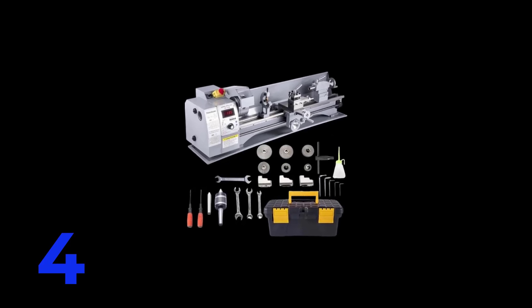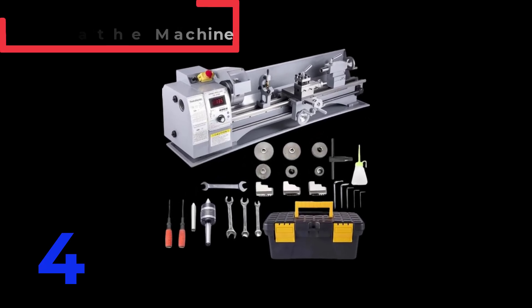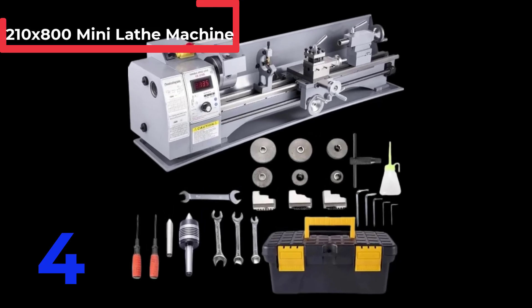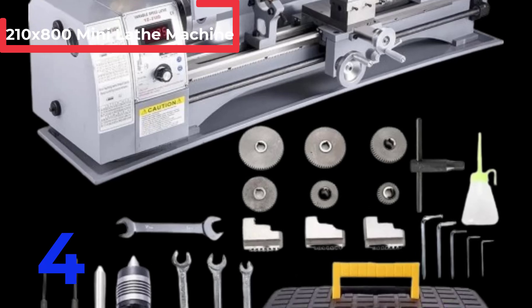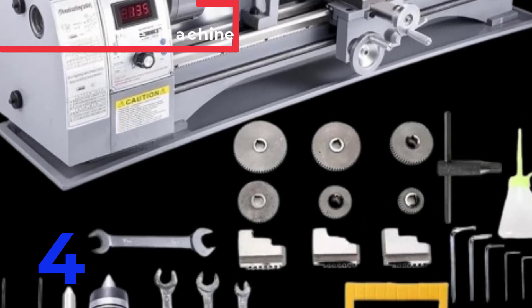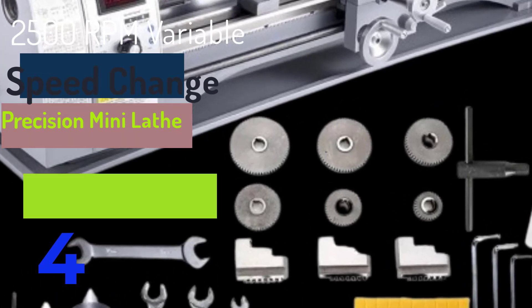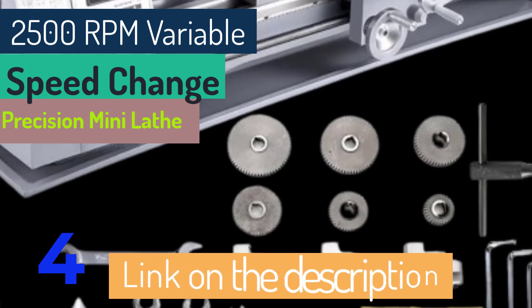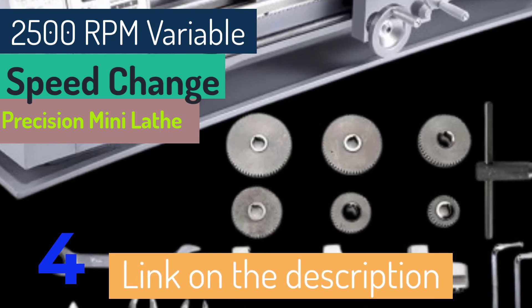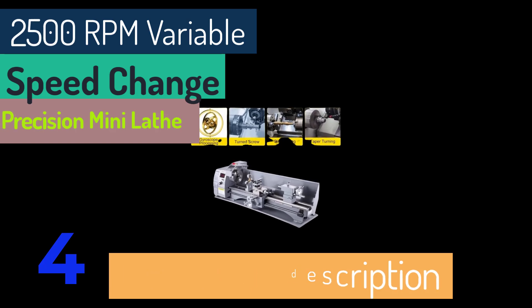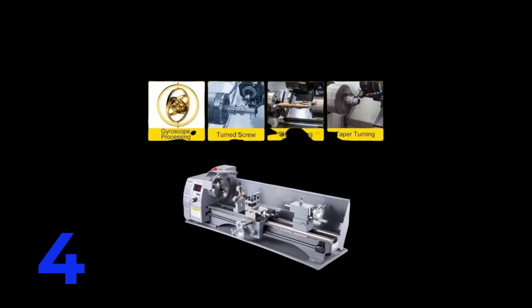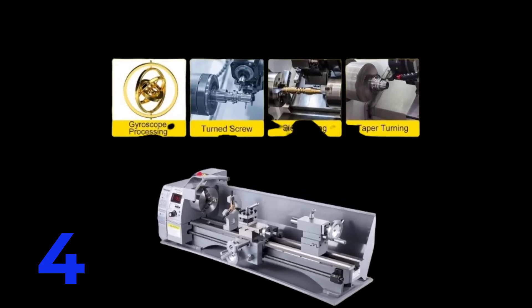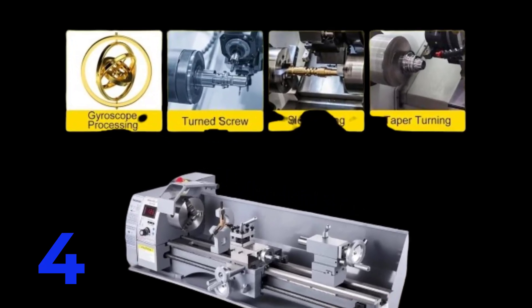The 210 by 800 mini lathe machine offers precise metal turning with a powerful 850 watt motor and variable speed up to 2500 RPM. Ideal for milling and turning various metals, this horizontal lathe ensures accurate and efficient operation. Originating from the US, this machine is in new condition and branded by XMSJ. Although it's a normal lathe and not CNC, it provides excellent precision for hobbyists and professionals alike.